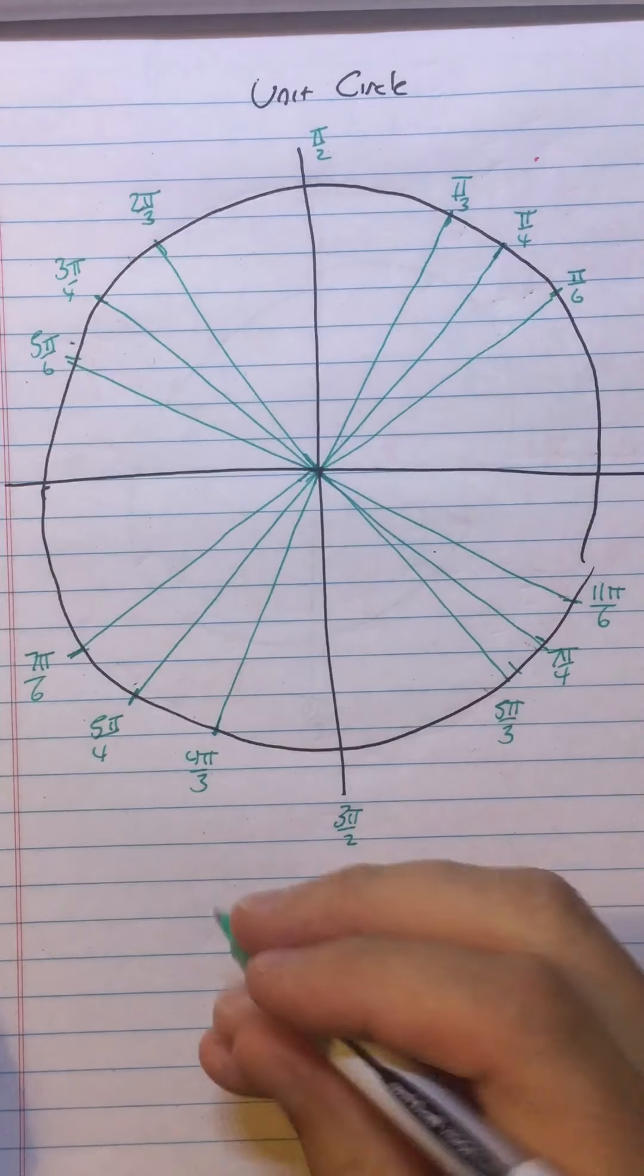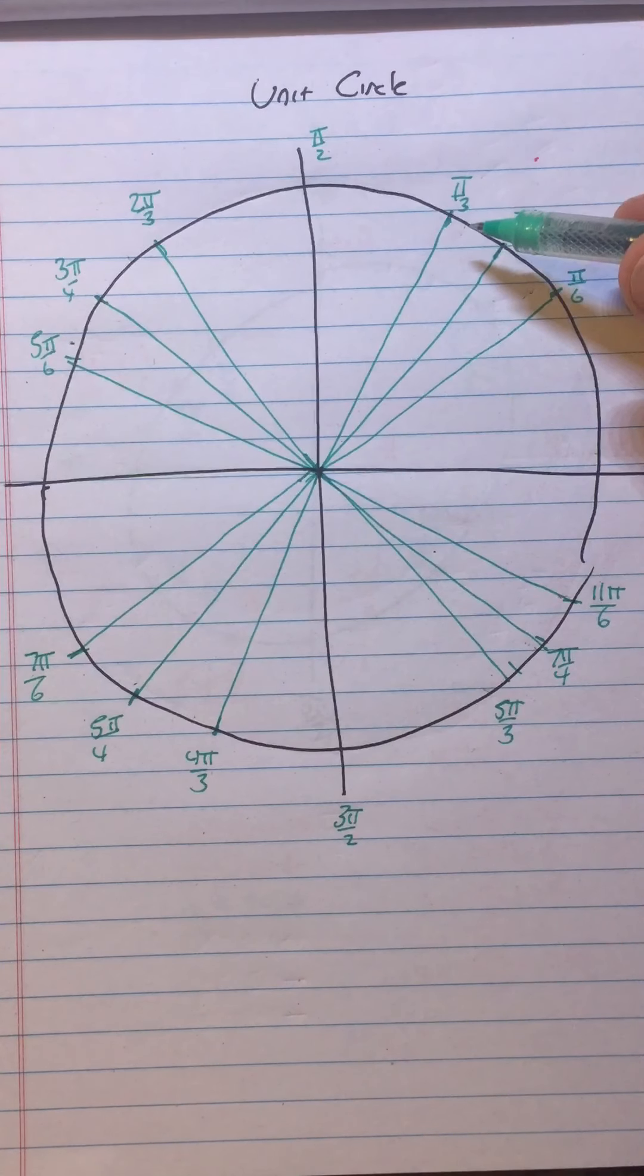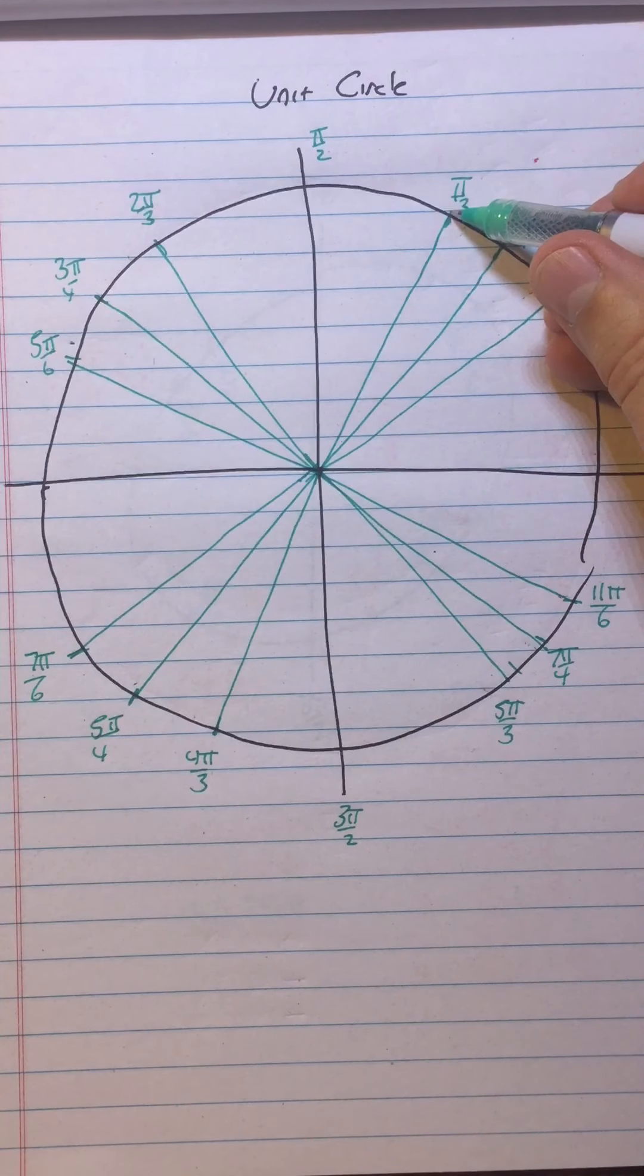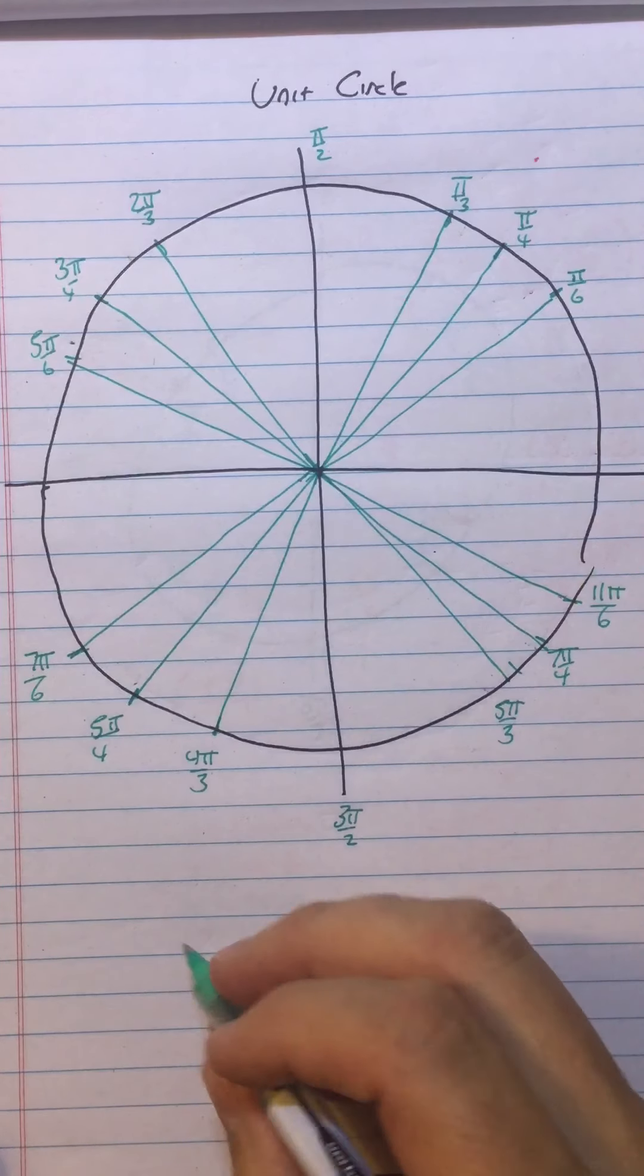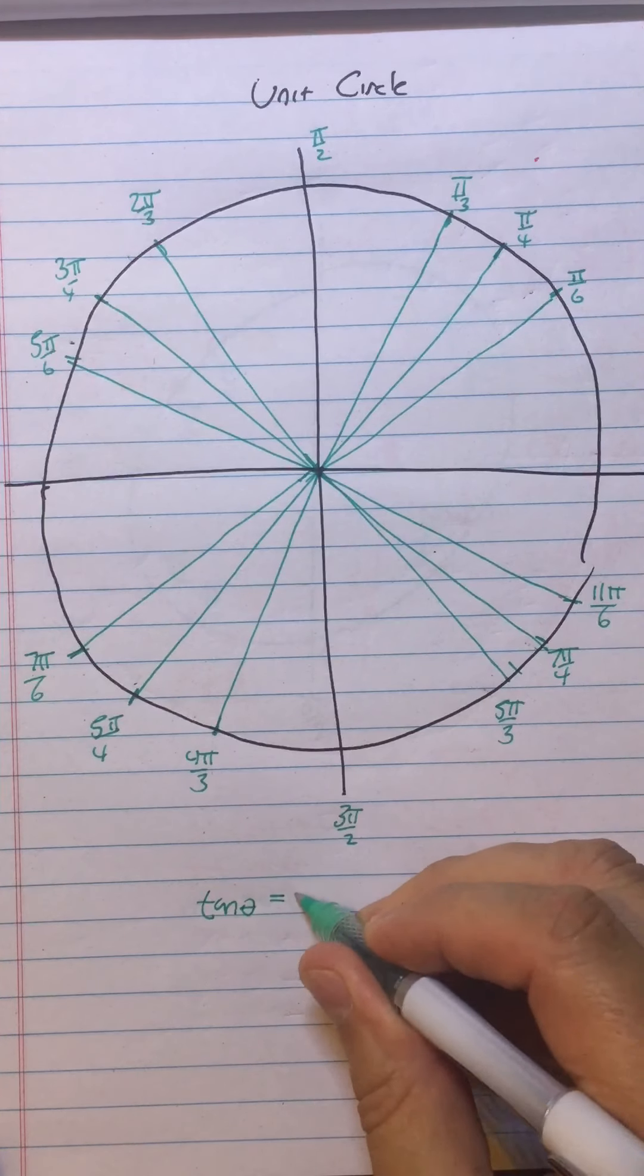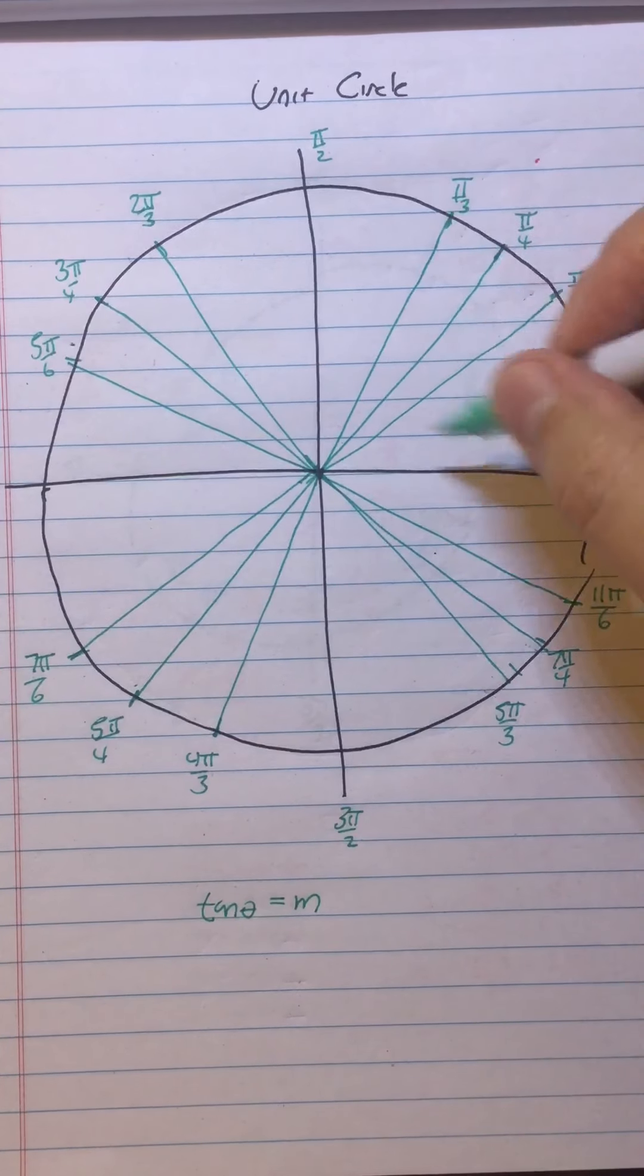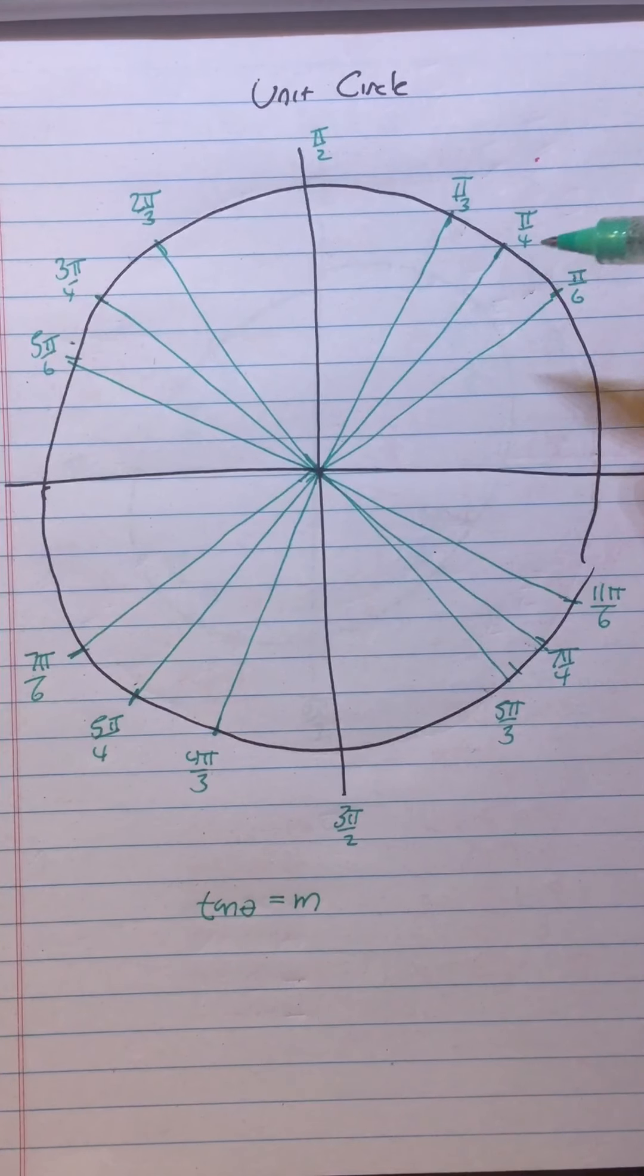But here's a shorter way to do that. If you understand that because tangent is sine over cosine, and sine is the y-coordinate, cosine is the x-coordinate, it therefore follows that tangent of θ equals the slope of this segment, because it's rise over run. Y over x is rise over run.